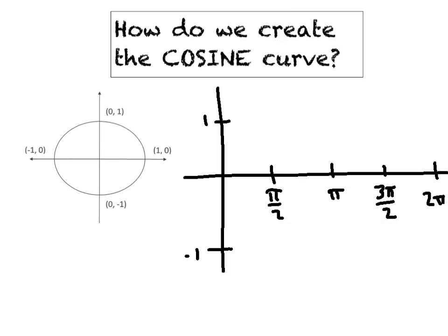Now we're going to talk about how to create the cosine curve and show you how everything comes from the unit circle. I've drawn my x and y-axes and labeled the four main critical points in terms of pi. Starting at zero degrees — cosine is all about the x-coordinate. The x-coordinates all the way around the unit circle describe the values of cosine. At zero degrees or zero radians, the x-coordinate is 1, so I've got a height of one.